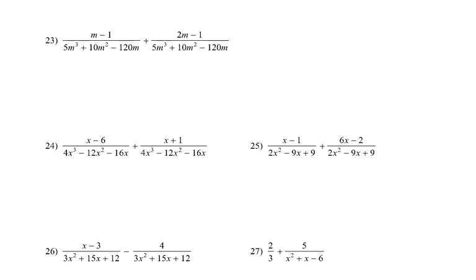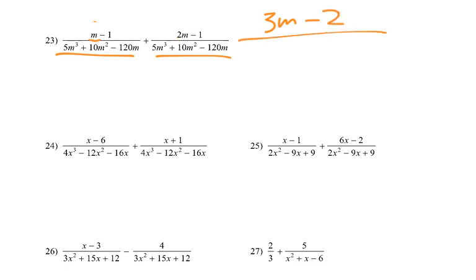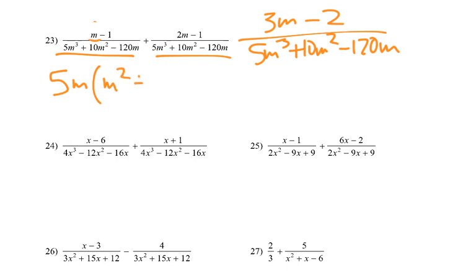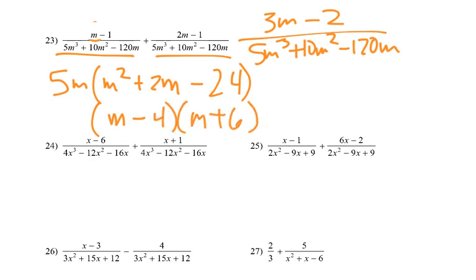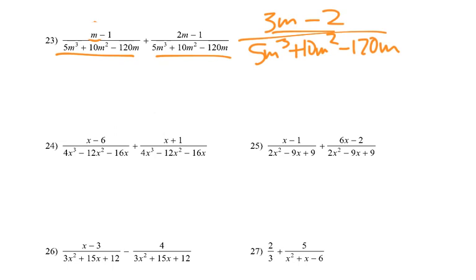Now we just keep increasing difficulty. Still the same denominator, so I'm just adding the tops. m and 2m give 3m. Negative 1 plus negative 1 is minus 2, over 5m cubed plus 10m squared minus 120m. We could call that good, but technically I should pull out a 5m, giving m squared plus 2m minus 24. That factors to m minus 4 times m plus 6, but none of those would eliminate anything. So if you can just get the addition part down, I'm happy with that.